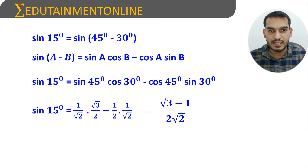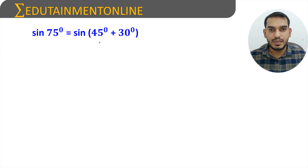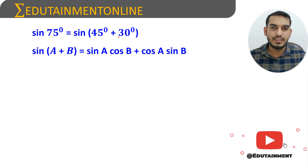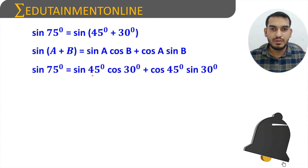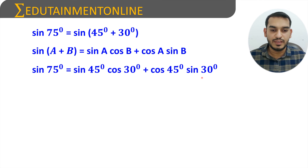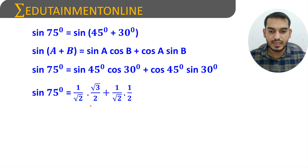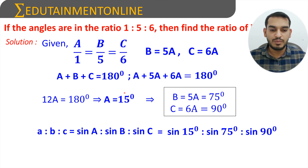To find sin 75°, we write 75° = 45° + 30°, using the formula sin(A + B) = sin A cos B + cos A sin B. Substituting A = 45° and B = 30°: sin 75° = sin 45° cos 30° + cos 45° sin 30° = (1/√2)(√3/2) + (1/√2)(1/2). Since the denominator is the same, sin 75° = (√3 + 1) / (2√2).